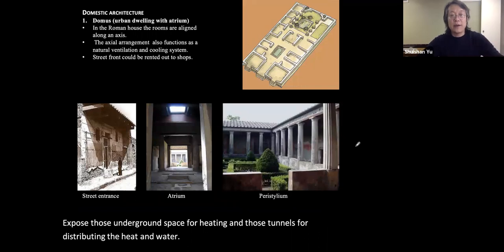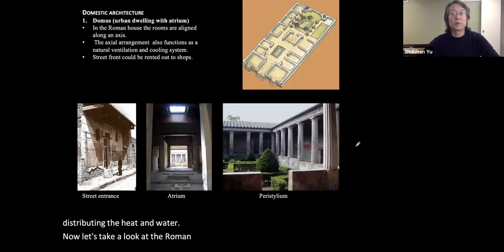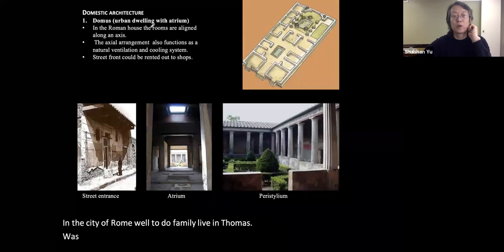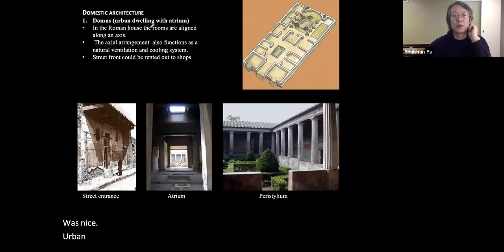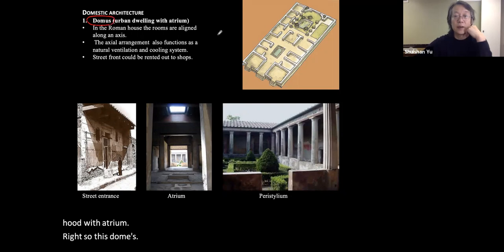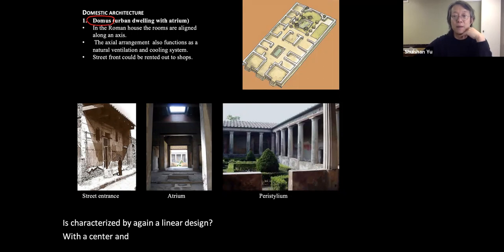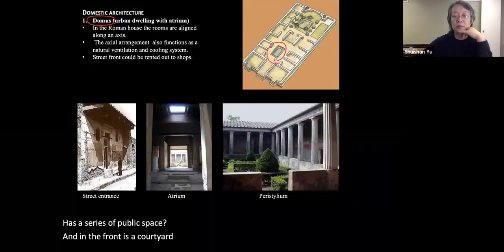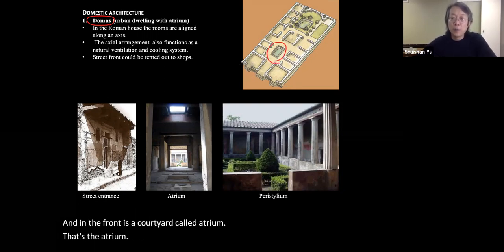Now let's look at Roman residential architecture. In the city of Rome, well-to-do families lived in a domus — a nice urban house, an individual building for a single family household with an atrium. The domus is characterized by a linear design with a center and two sides. The center has a series of public spaces, and in the front is a courtyard called the atrium, open to the street.